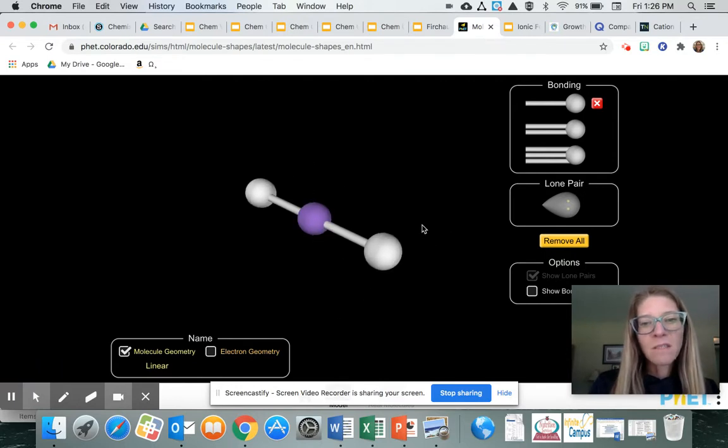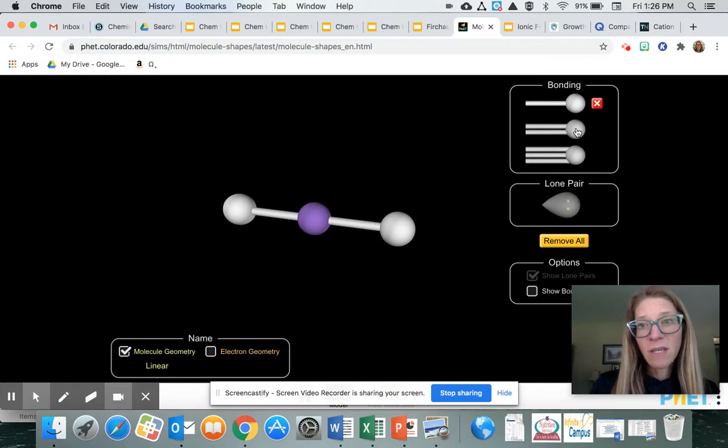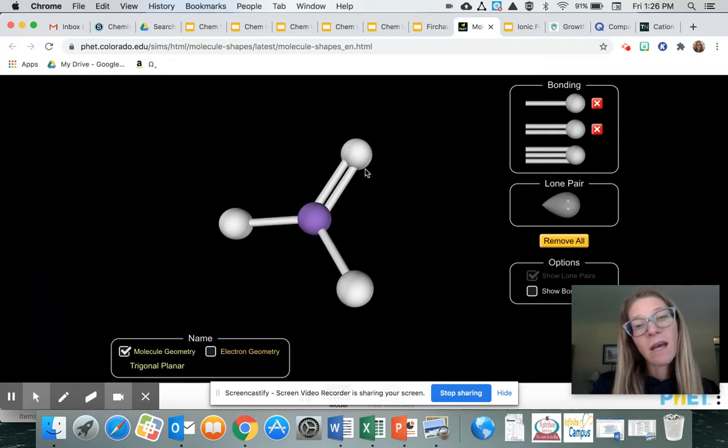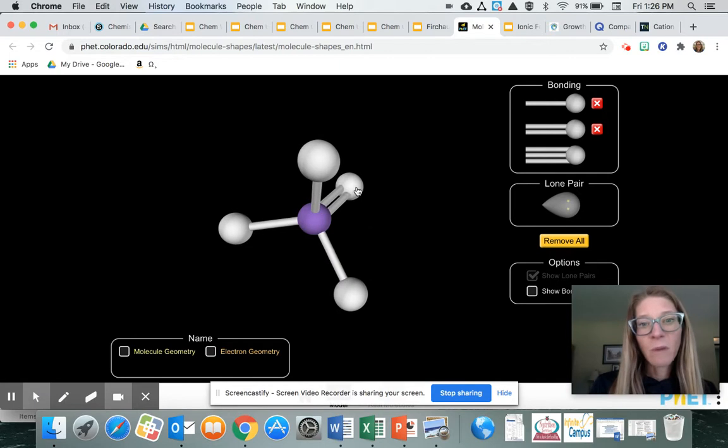You can see each time you add a bond, whether it's a single bond or double bond, the molecule adjusts automatically to accommodate for the shape based on the VSEPR theory. So VSEPR theory says these valence shell electron pairs are repelling each other, so as we add another bond those bonds repel each other and push the other ones out of the way.